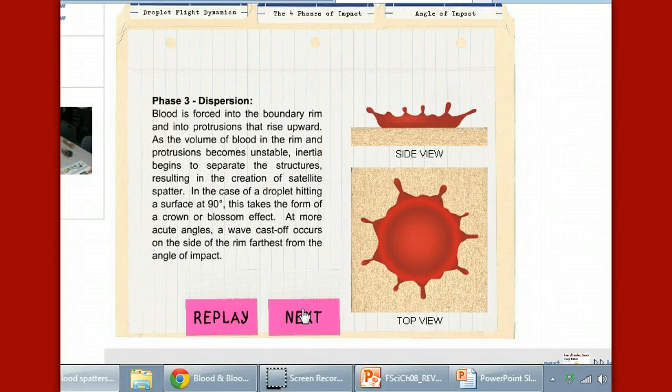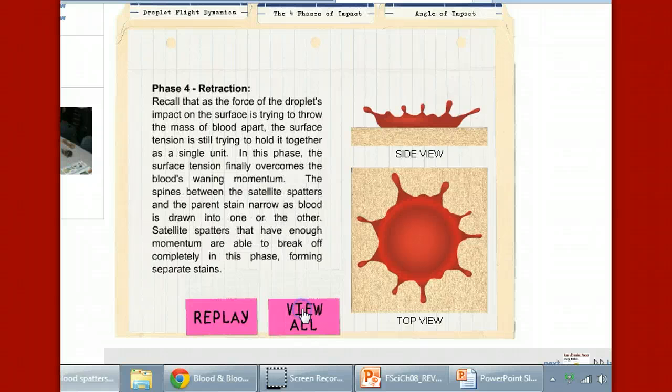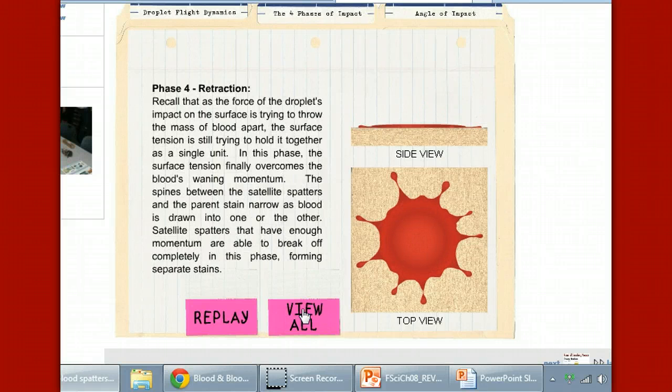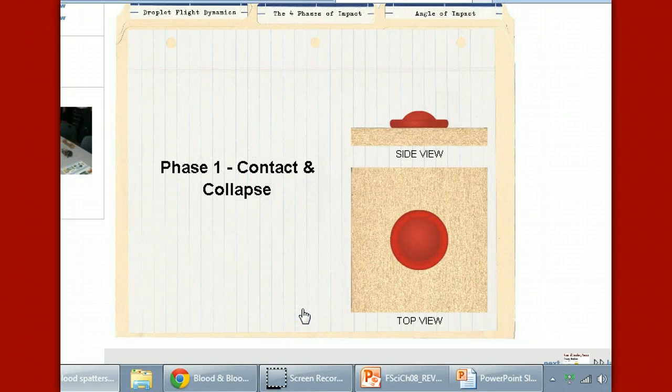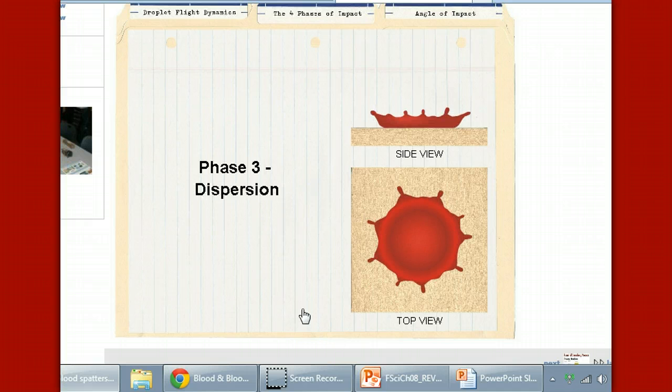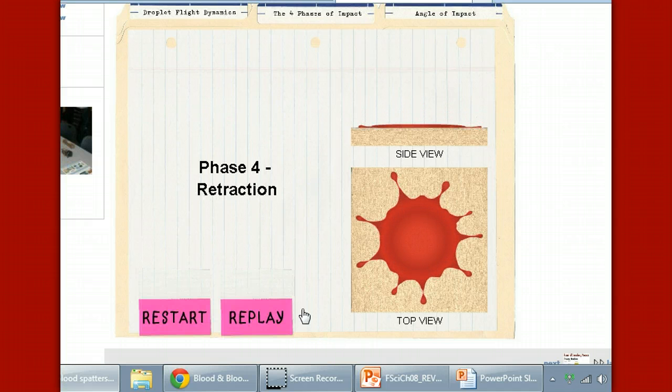Then the spikes, or dispersion, occurs. This is where the blood is starting to overcome its cohesive nature. And then the spikes land down, and we call that retraction, when it retracts down to the surface. Pretty cool. Here it is all in one motion.